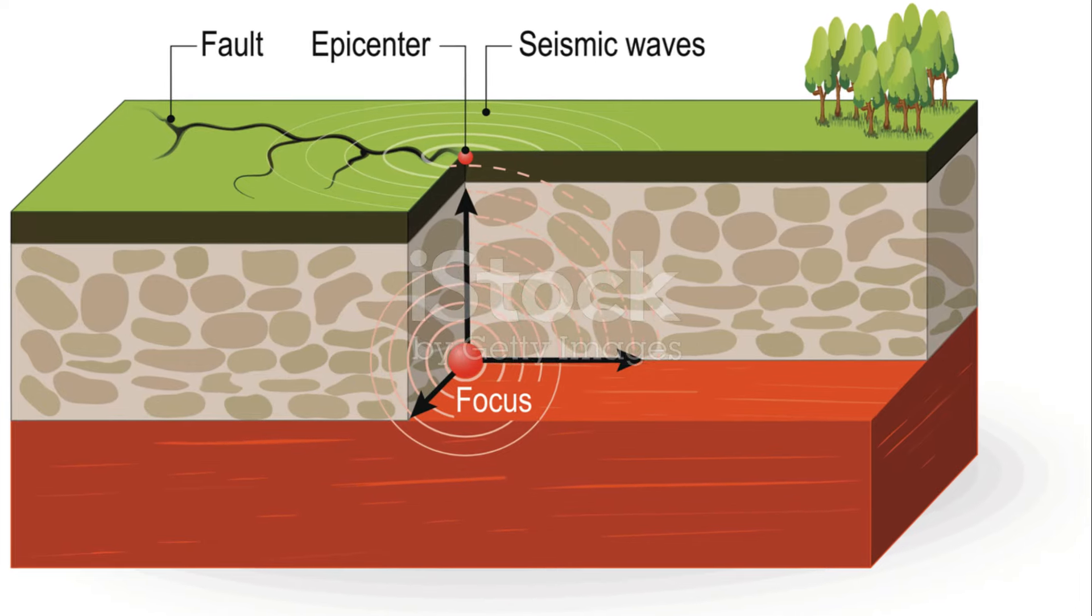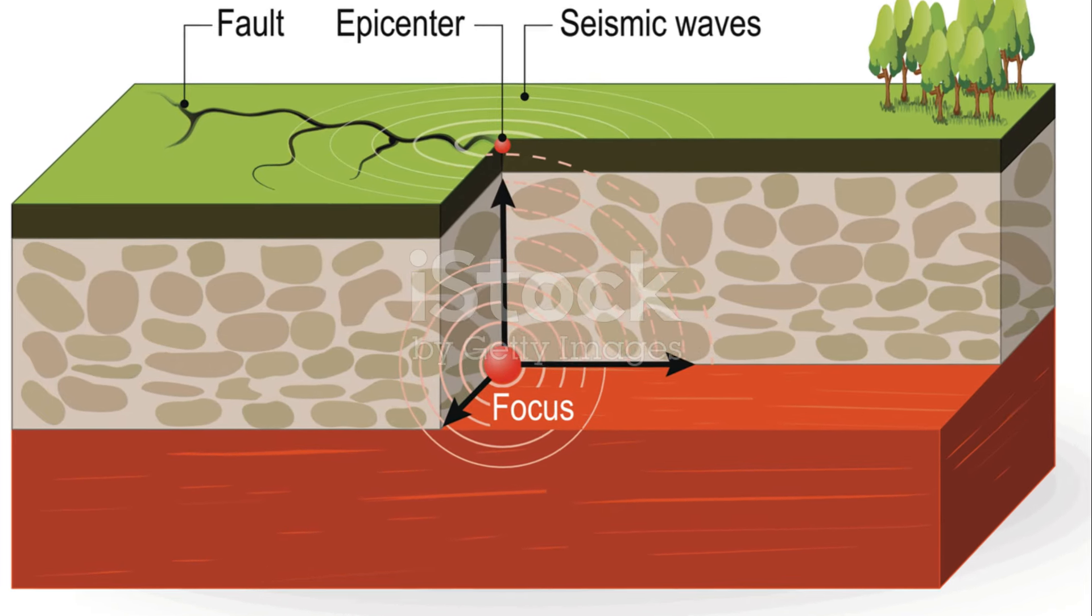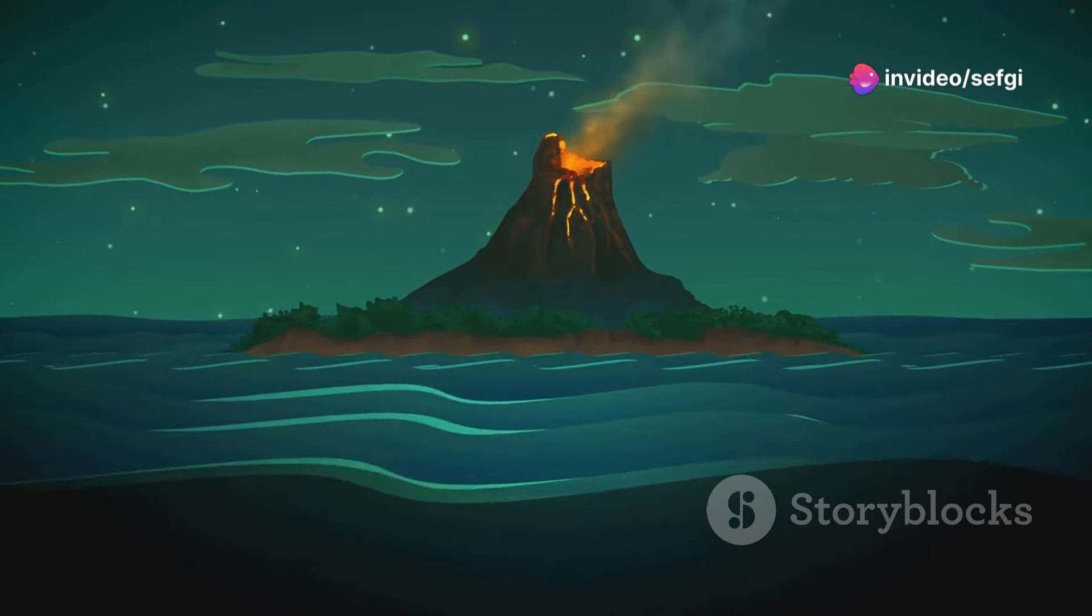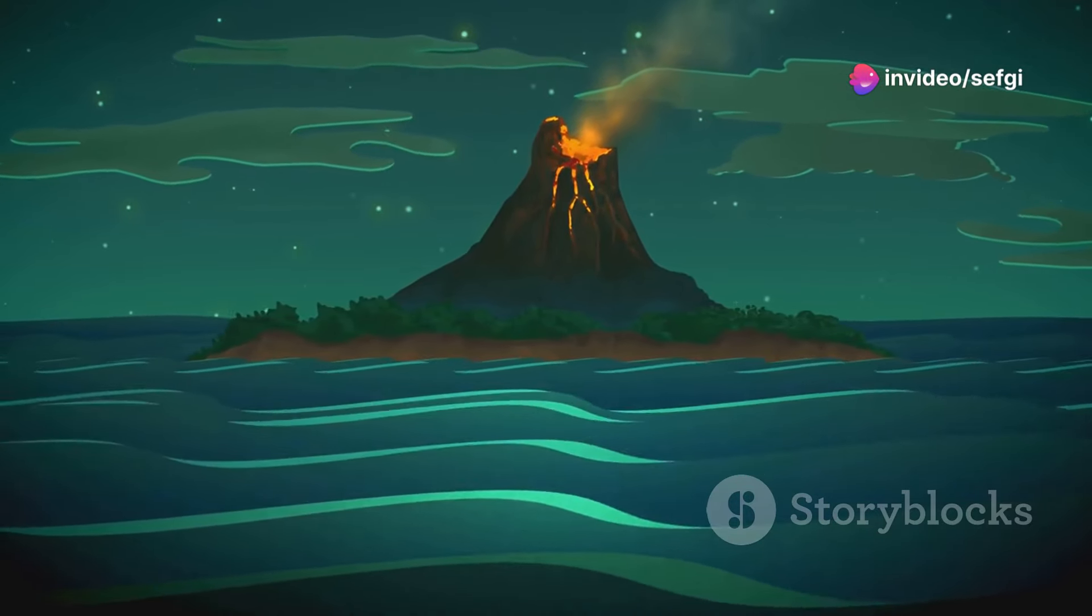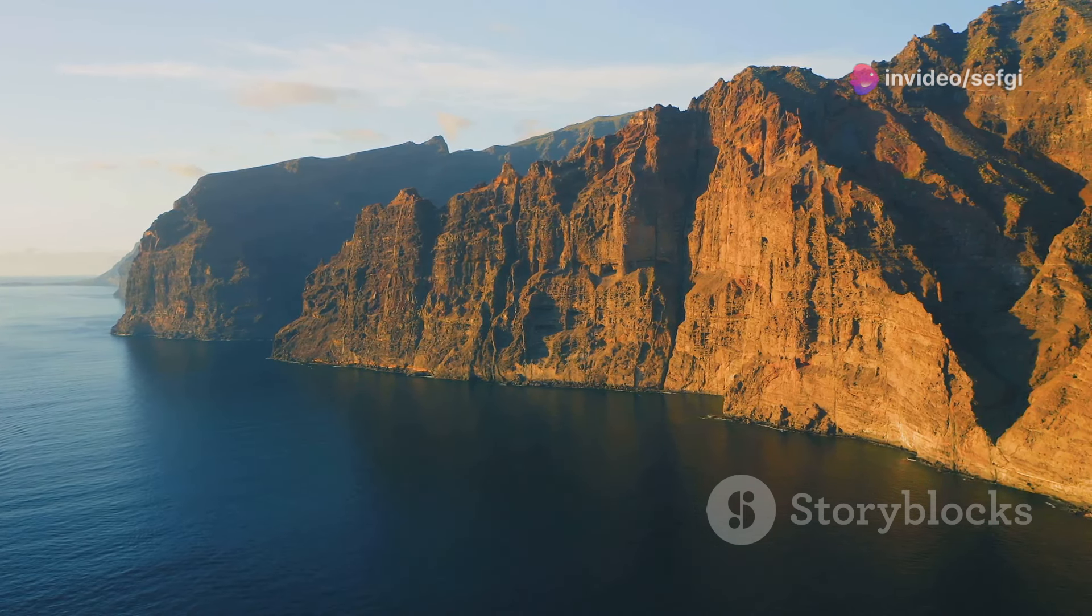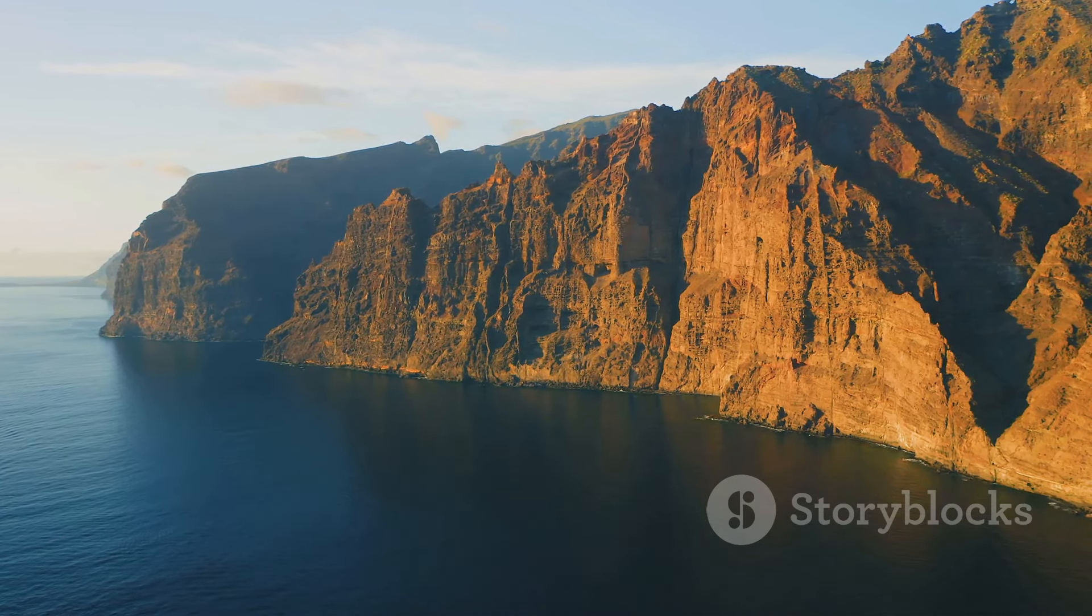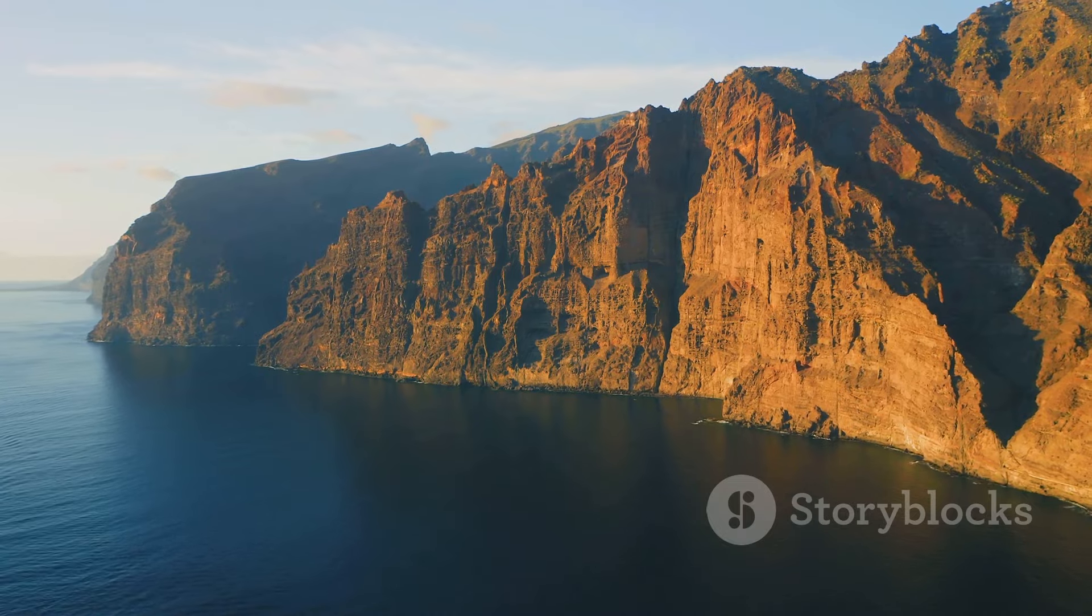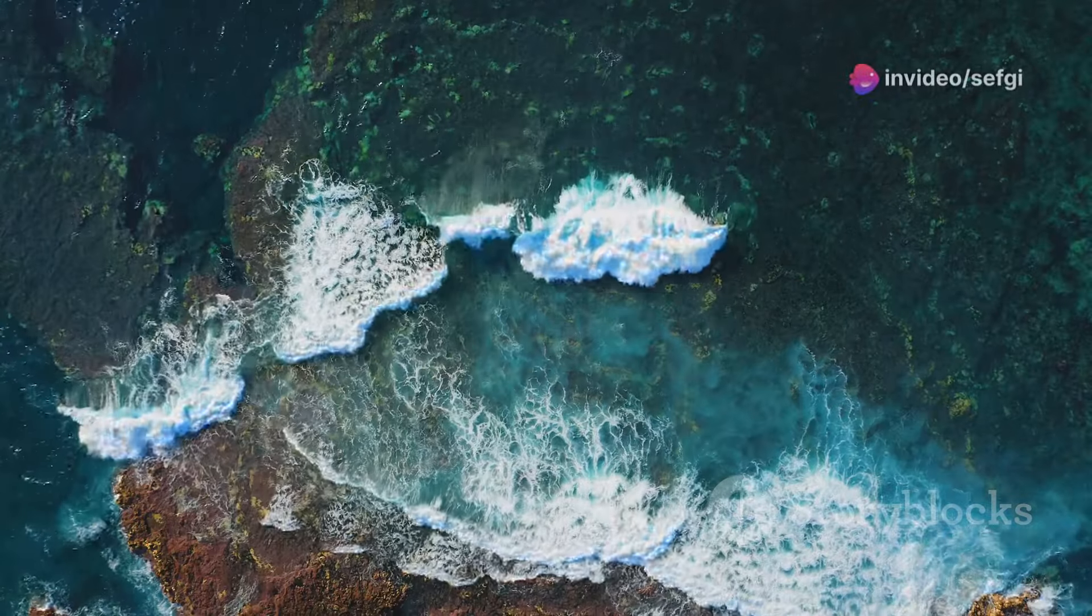The ocean floor isn't a static landscape, it's constantly being recycled. Yes, you heard that right. Our planet's seafloor is a hotbed of geological activity. Let's talk about seafloor spreading. This is a process where molten rock or magma erupts through the ocean floor at mid-ocean ridges, the longest mountain range in the world. As the magma cools, it hardens into new crust, pushing the older, cooler crust away.